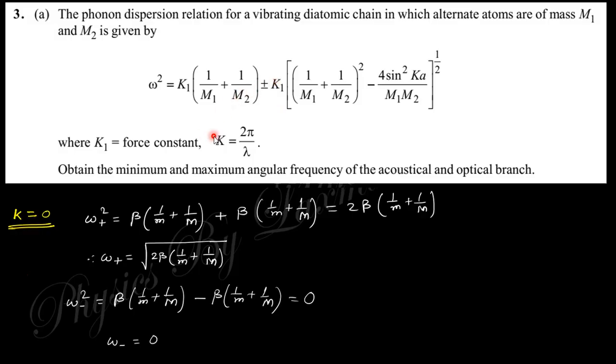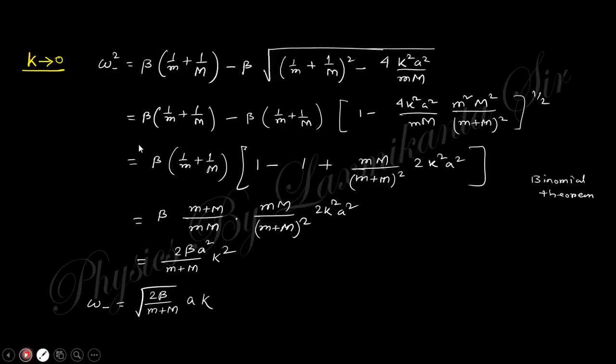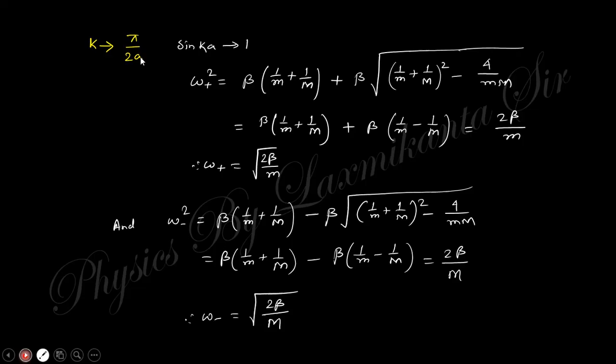Obtain the minimum and maximum angular frequency in the optical mode. For k = 0, you obtain ω₊² equals like that, so ω₊ is like that. Now take ω₋, when you take minus here you obtain zero. For plus this is the value, and for minus this is for k → 0. For k → π/(2a), you obtain for plus this value and for minus that value.